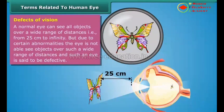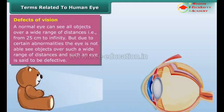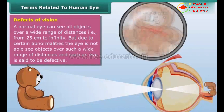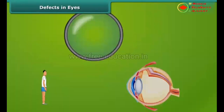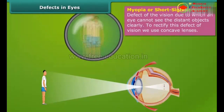Defects of vision: A normal eye can see all objects over a wide range of distances, from 25 cm to infinity. But due to certain abnormalities, the eye is not able to see objects over such a wide range and is said to be defective. Myopia or short-sightedness: A defect of vision due to which an eye cannot see distant objects clearly. To rectify this defect, we use concave lenses.